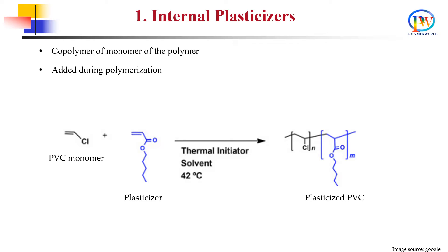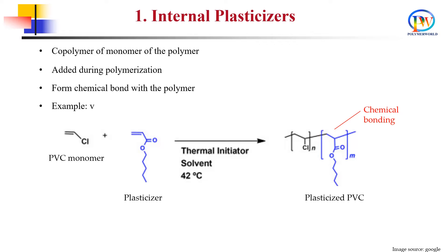Internal plasticizers provide flexibility to the polymer by reducing Tg through grafting or co-polymerization. The plasticizer forms a chemical bond either with the main chain or is attached as a side chain. The most common monomers used as internal plasticizers are vinyl acetate and vinylidene chloride. These plasticizers are in limited use due to their limited availability.